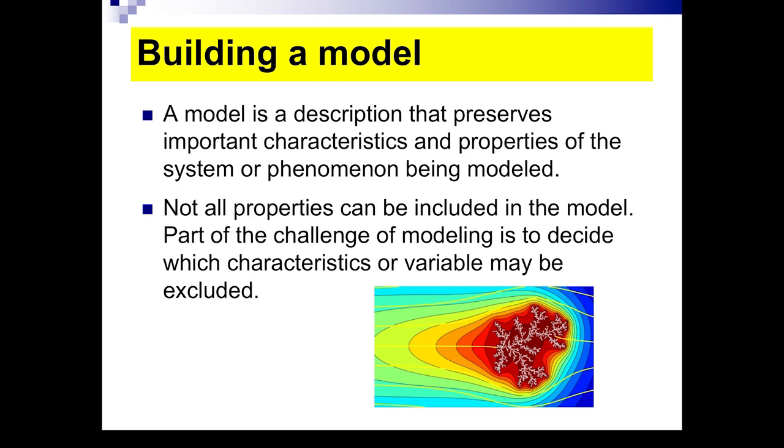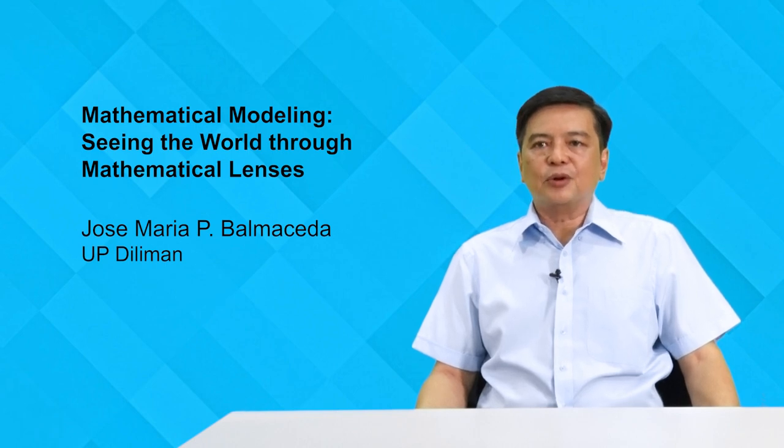How does one build a model? It's very difficult actually because a model is a description that hopefully preserves important characteristics and properties of the system or phenomenon being modeled. So a model is not perfect. It just describes with some degree of accuracy what you want to study. When you want to study something, you can't put all properties in your model. Part of the challenge of modeling is to decide which characteristics or variables may be excluded.